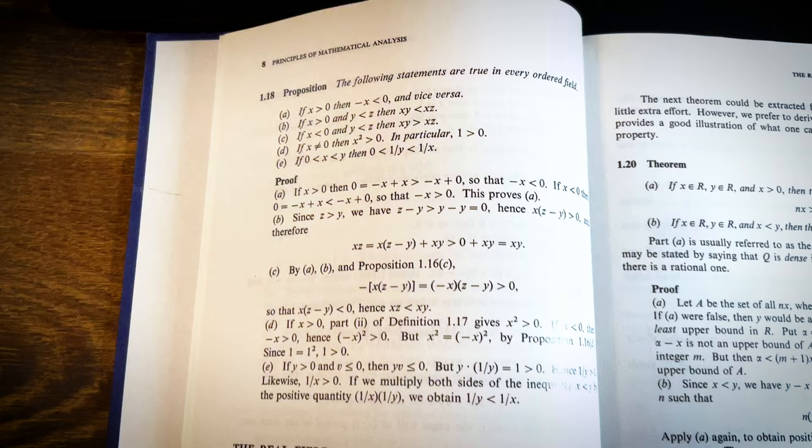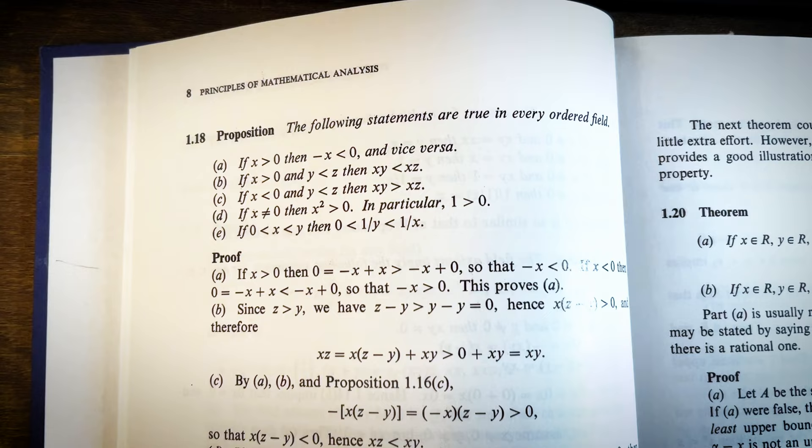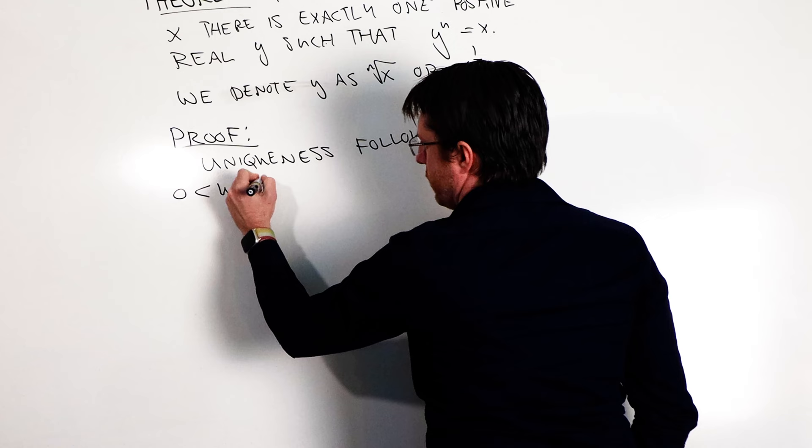When you are approaching a theorem in a textbook, the context is probably the most important thing to establish. Theorem 1.21 comes right after we establish a lot of basic results about ordered fields, and the real numbers were just introduced as an ordered field containing the rationals that has the least upper bound property. Going into the proof, if the book is coherently written, we should expect these results to be used profitably. For instance, these results about inequalities from Proposition 1.18 is going to be used extensively and iteratively throughout the proof.